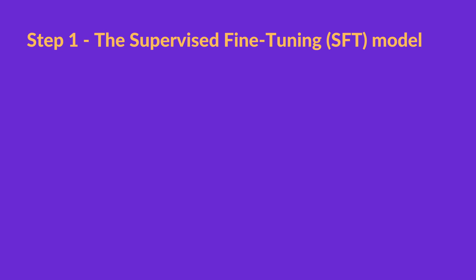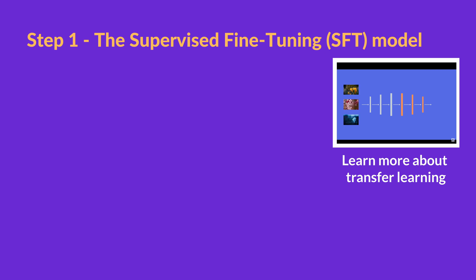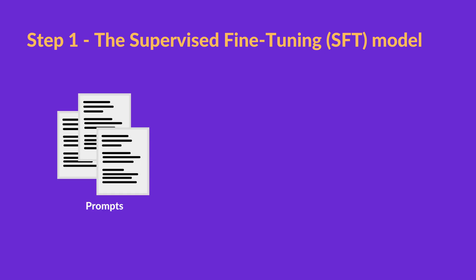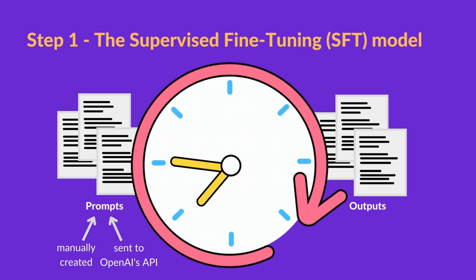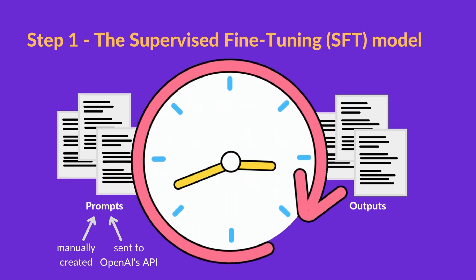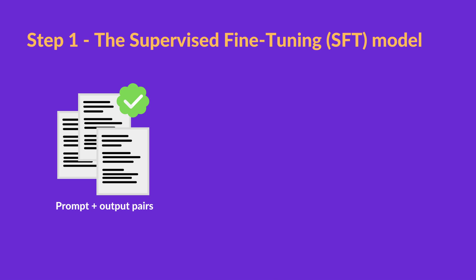The first step is collecting demonstration data in order to train a supervised policy model, referred to here as the SFT model. For data collection, human labelers were asked to create the ideal output given a prompt. The prompts are sourced partly from the labelers themselves and partly from requests sent to OpenAI through their API, for example for GPT-3. This process is slow and expensive, which is why the result is a relatively small, high-quality curated dataset used to fine-tune a pre-trained language model.